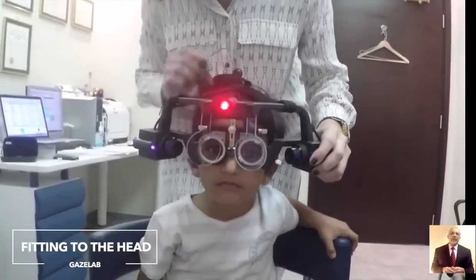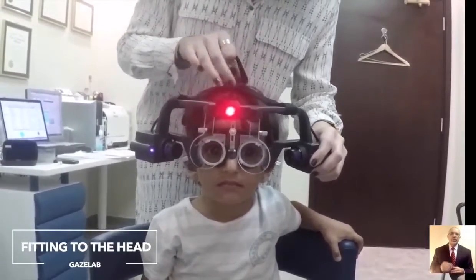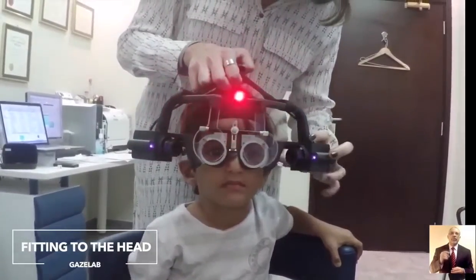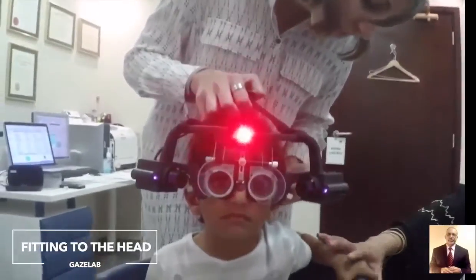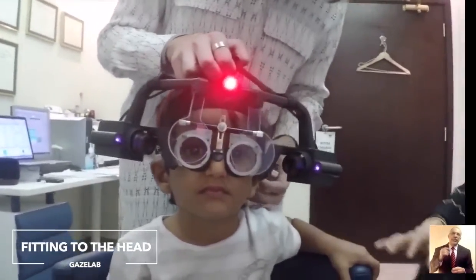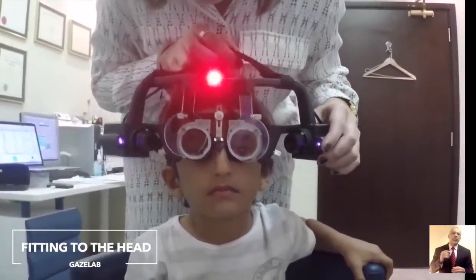For the other fifteen patients, inferior oblique overaction was measured and diagnosed using a computerized video-oculographic measuring system which mounted easily over the patient's head and is called the Gaisler machine.